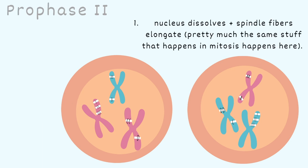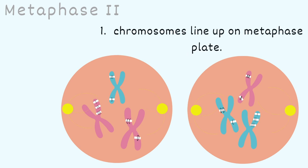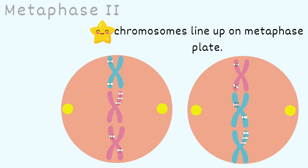These cells are ready to leave telophase 1 and move on to prophase 2. In prophase 2, the nucleus dissolves and the spindle fibers elongate — pretty much the same stuff that happens in mitosis happens here. These yellow dots represent the centrosomes and the lines coming out of them are the spindle fibers. The cell next leaves prophase 2 and enters metaphase 2, where the chromosomes line up on the metaphase plate.